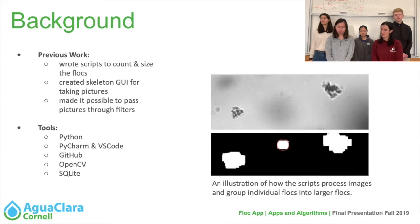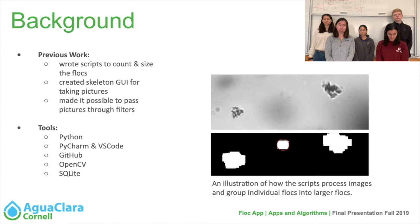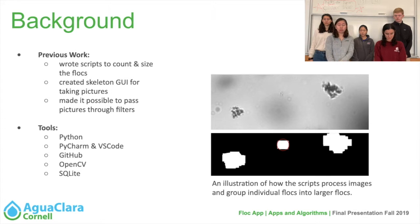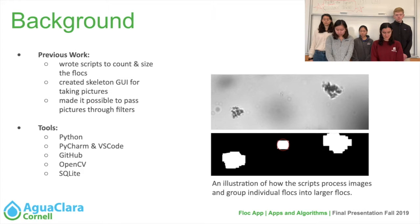In the past, FlockApp has written scripts capable of processing images taken by a microscopic camera, and from those images it counts and sizes the flocks. This works by locating the individual flocks and then grouping together closely located flocks into a single larger flock. The images are passed through a black and white filter in order to more easily detect the flocks, and the team has designed the GUI for displaying all the necessary buttons for the app.